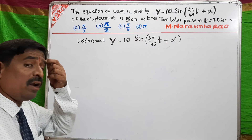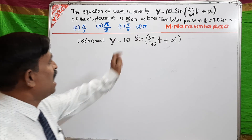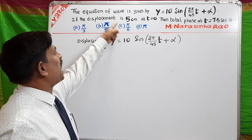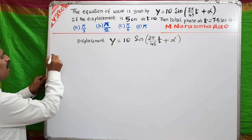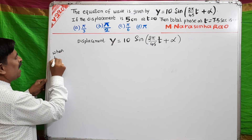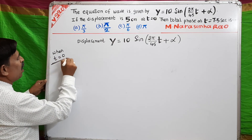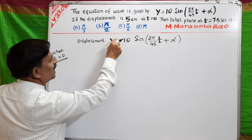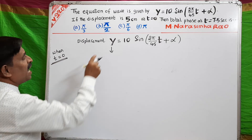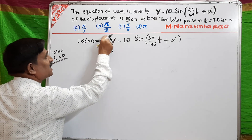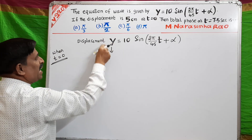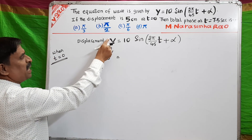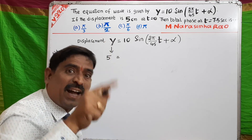They told very clearly: at time t = 0 seconds, the displacement is 5 cm. So when time is 0, the displacement represented by y is given as 5 cm, meaning y = 5 cm.